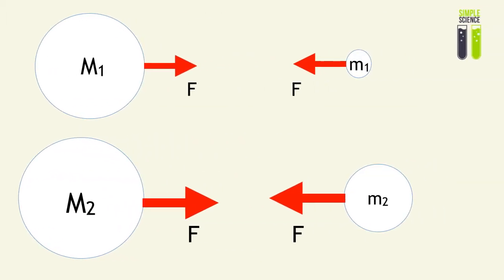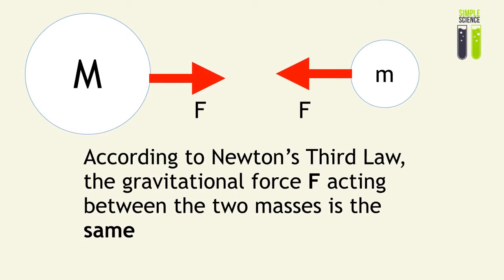What he saw was that when there is a force between two masses and you increase the masses of the two objects, you find that the force increases also. The force between the two masses is the same according to Newton's third law — the force of big M acting on little m is equal to the force of little m acting on big M. In other words, the force of the earth acting on me is equal to the force of me acting on the earth.